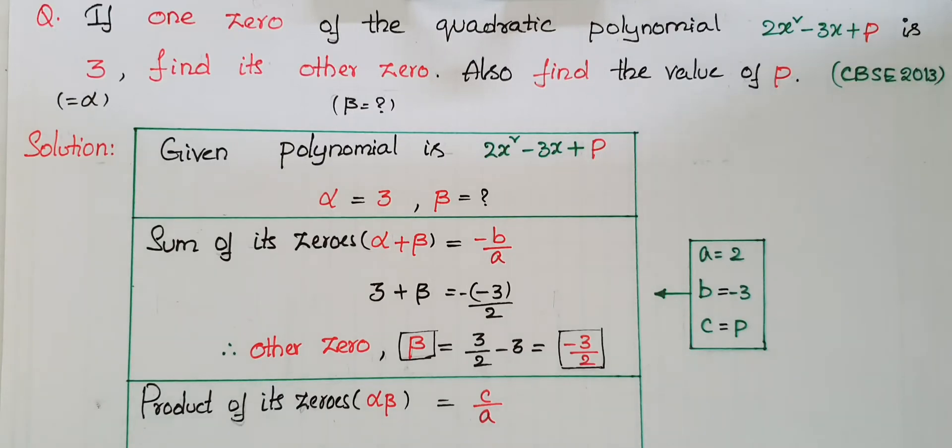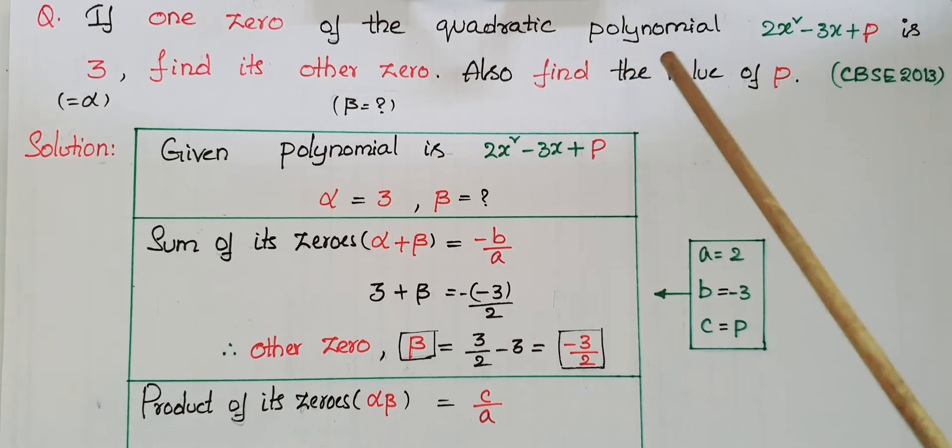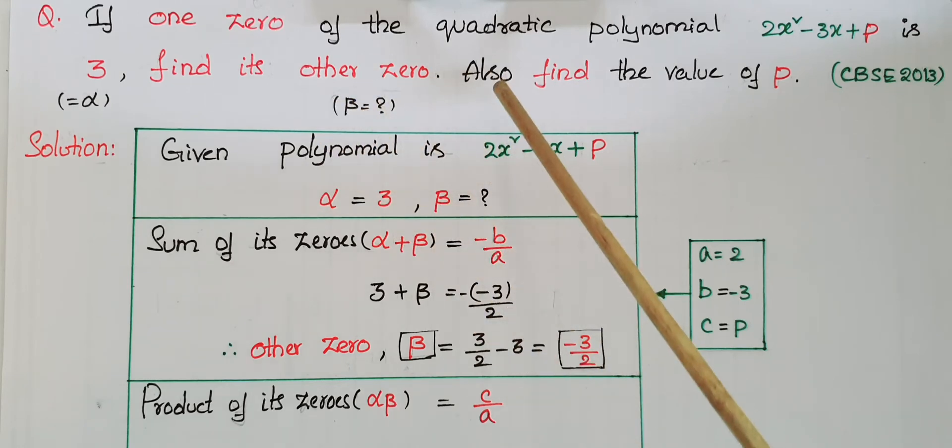Hello everyone, today I am going to solve this problem. If one zero of the quadratic polynomial 2x² - 3x + p is 3, find its other zero. Also find the value of p.